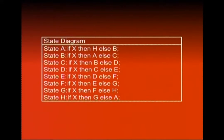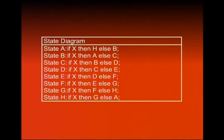Next table mein state diagram define kiya gaya hai by writing statements. 8 states ke liye next state batana hai — kaise switch hogi. State A mein: if X then H else B. State B ke liye: if X then A else C. Isi tarah state C ke liye D, E, F, G, aur H ke liye bhi isi kisam ki if-then-else statements likhni hain. Aakhri wali state H: if X then G else A — yeh recycle hokar wapas state A pe pahunch jaata hai.